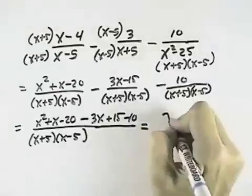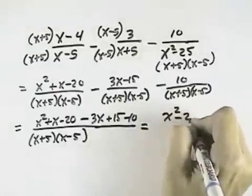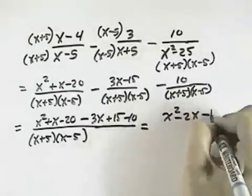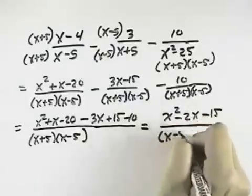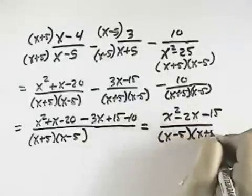Combining the numerator or simplifying, we have x squared minus 2x minus 15 over x minus 5 times x plus 5.